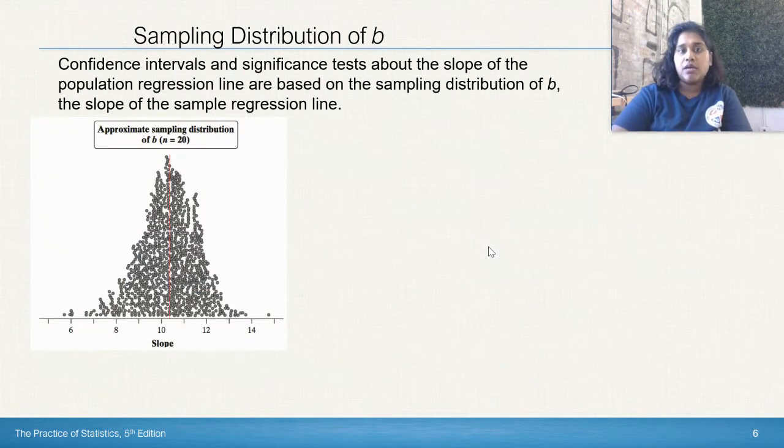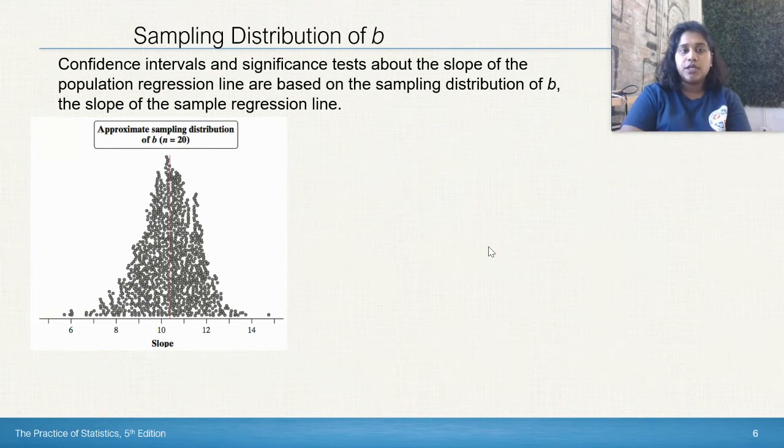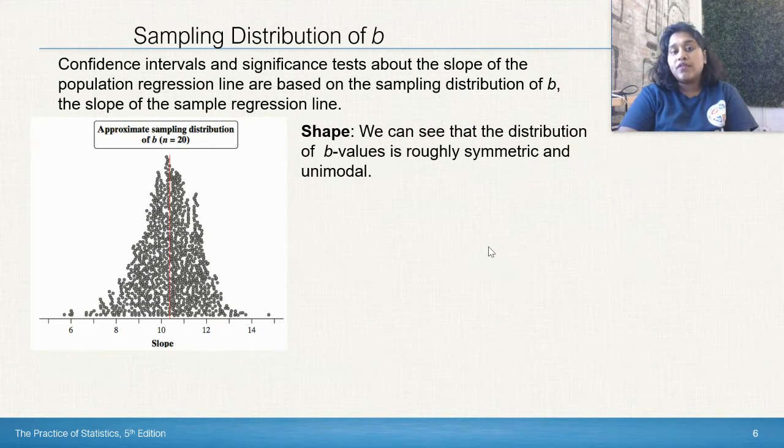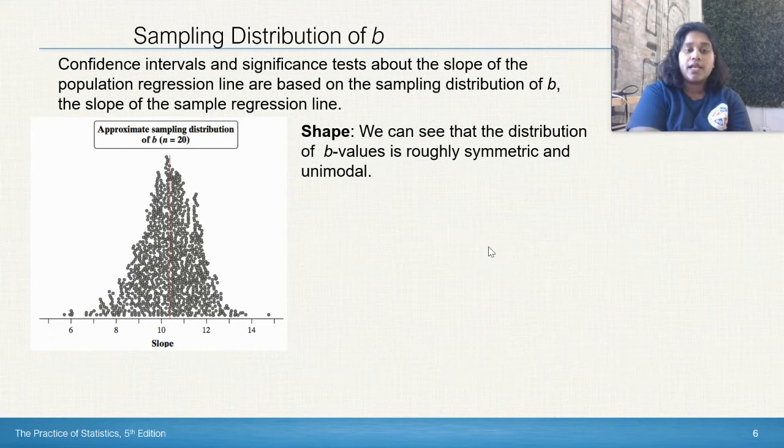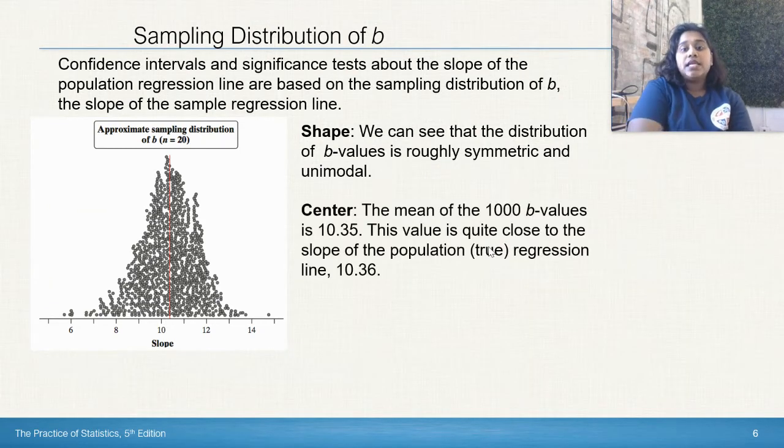Confidence intervals and significance tests about the slope of the population regression line are based off of the sampling distribution of b, or your slope, the slope of the sample regression line. We created this sampling distribution here, and we can see that the distribution of our b values, our slope values, is roughly symmetric and unimodal. It's pretty symmetric on the left and the right-hand side, and unimodal means there's a single peak.